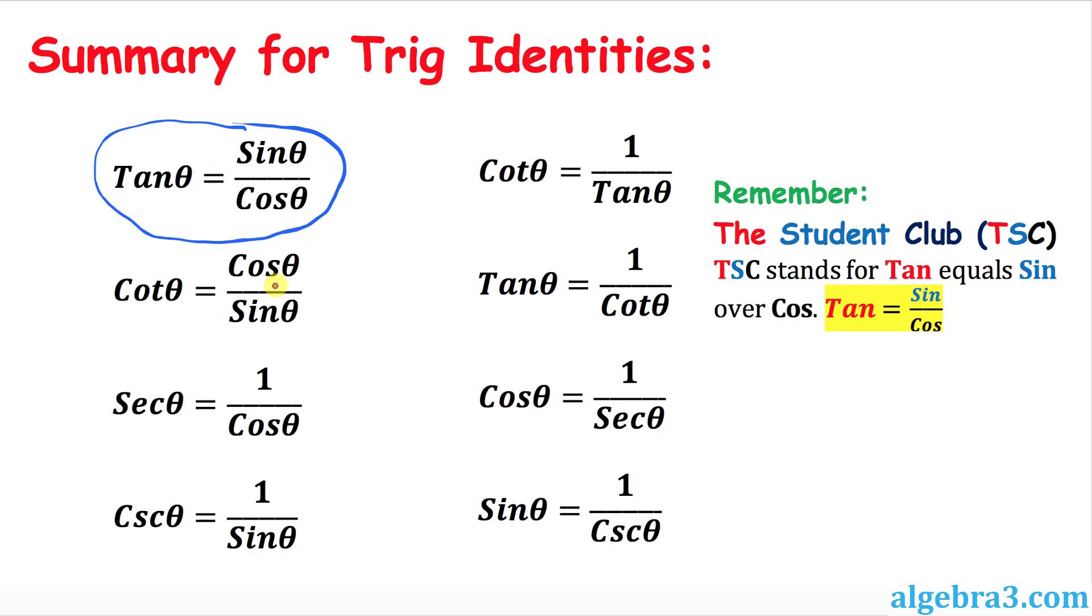And likewise, cotangent is cosine over sine. And then secant and cosine are reciprocal to each other. And cosecant and sine are reciprocal to each other as well. So, thanks for watching.